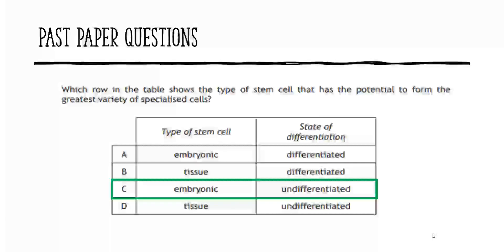The correct answer is C. We said embryonic stem cells are pluripotent, meaning they can become anything at all, whereas tissue stem cells are multipotent and therefore more limited — so we can rule out B and D. It has to be embryonic, as they have the most options. Second, we're looking at the state of differentiation: if they were already differentiated, they would have already begun specializing. To have the greatest variety — the most options — embryonic stem cells must be undifferentiated.